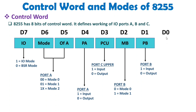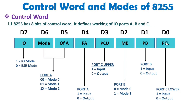D0 bit is there regarding the lower nibble of port C. If the lower nibble of port C is input, D0 should be 1. If the lower nibble of port C is output, D0 should be 0. So this control word justifies whether the 8255 is in IO or BSR mode.